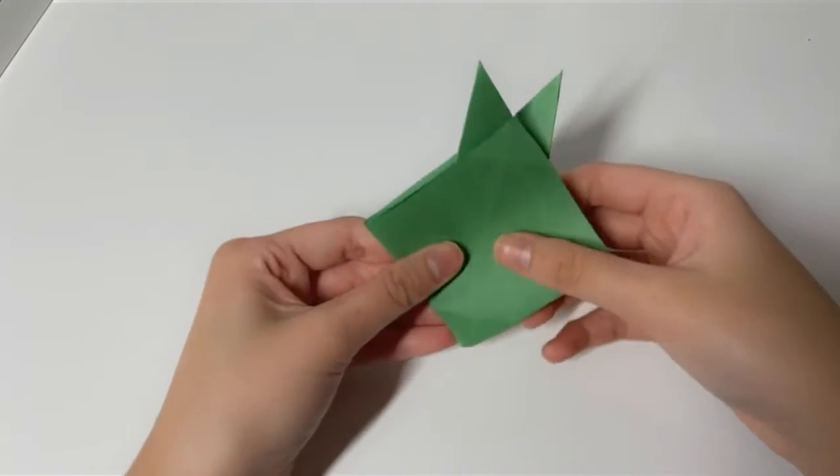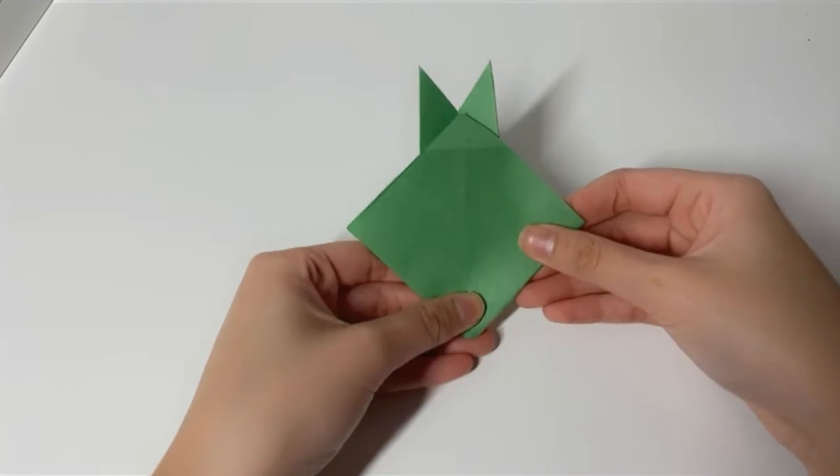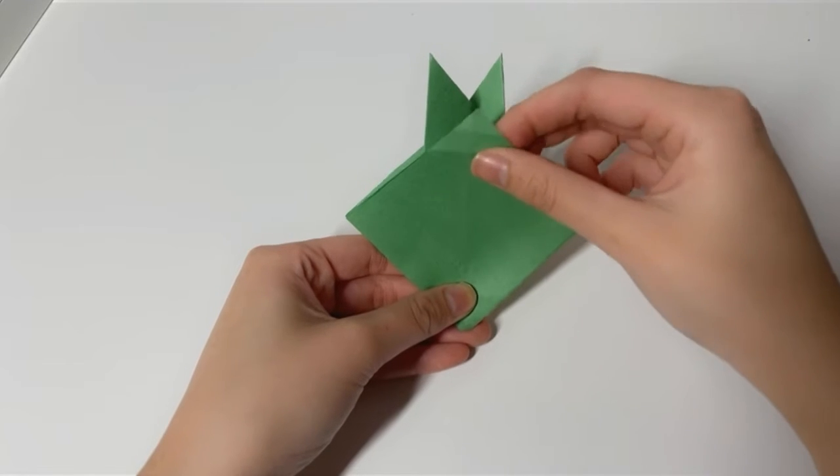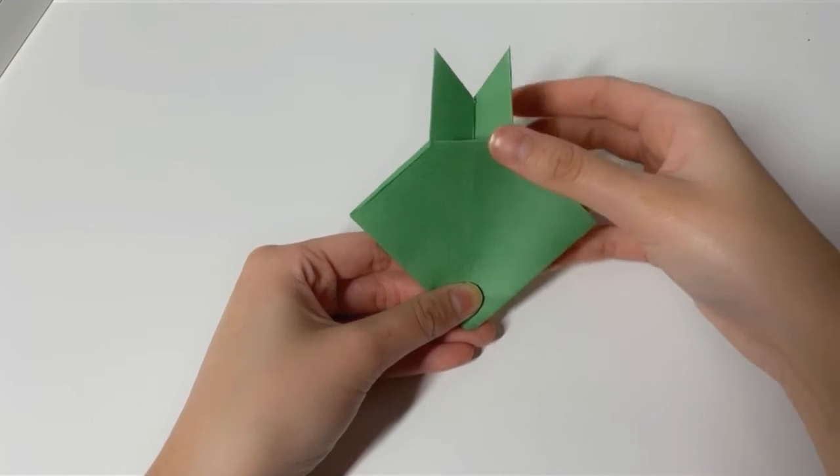So what you're going to do is you're going to flip it to the other side, the side without the two folds, and you're going to make the face. You're going to take the top, the pointy top, and you're going to fold it down.